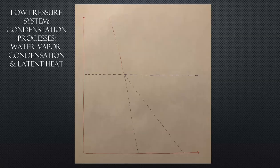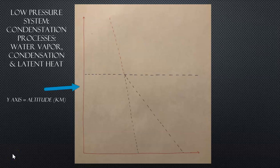So we have this graph, and I'm going to use this graph to describe all the different terms and processes that we're going to discuss in this video. The y-axis is altitude in kilometers. The x-axis is temperature in degrees Celsius. And we have these dashed lines.